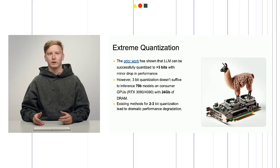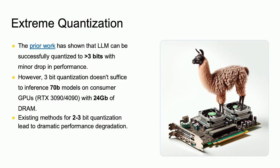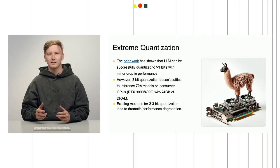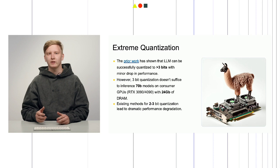Prior work has shown that LLMs can be successfully quantized down to 3 bits per weight with relatively minor drops in performance. However, 3-bit quantization doesn't suffice to run state-of-the-art open-source models with around 70 billion parameters or more on consumer GPUs that have up to 24 GB of DRAM. Previously existing methods for 2- to 3-bit quantization led to dramatic performance degradation, which nullified any benefits from using larger models. As such, there exists demand for post-training quantization methods capable of compressing large language models down to the 2- to 3-bit per weight range while retaining most of their performance. Enter AQLM.